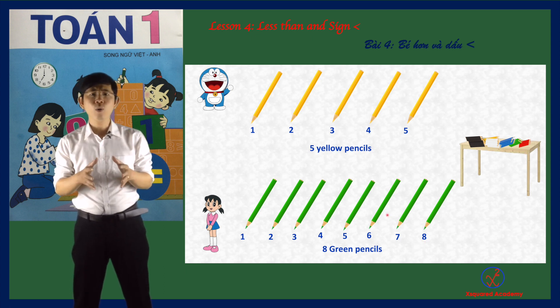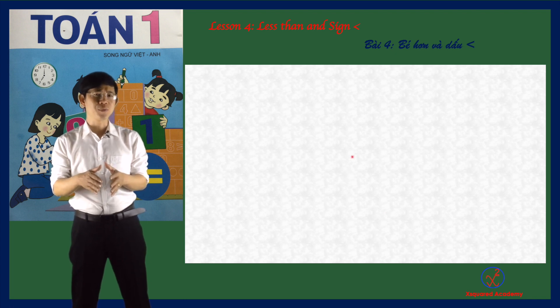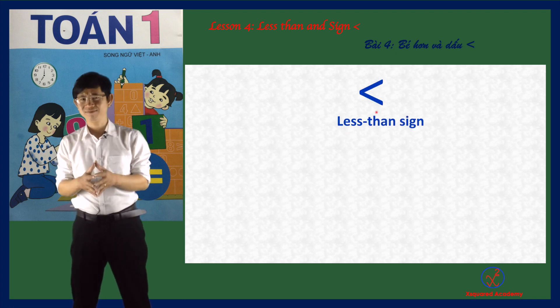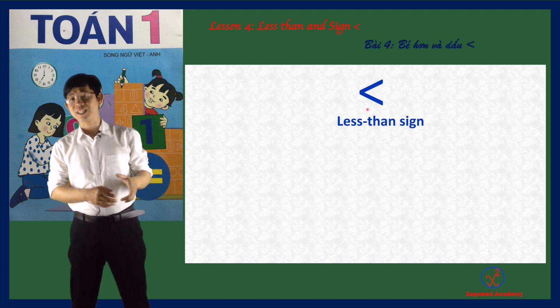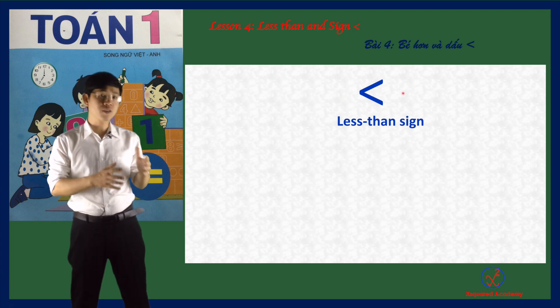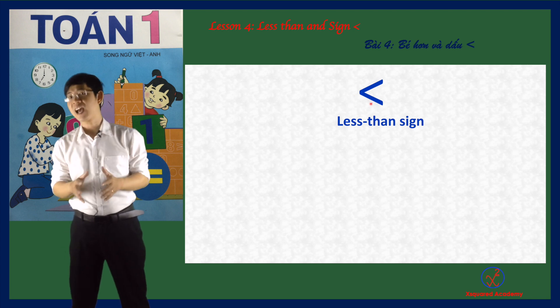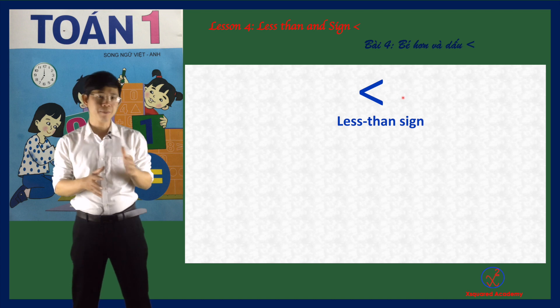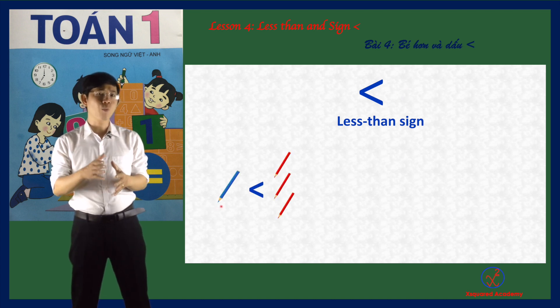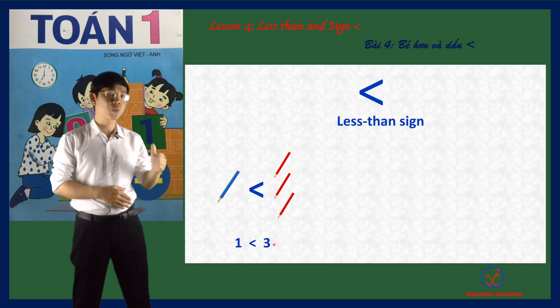Do you know how we write less than in math? We use less than sign. The less than sign has two sides. Small side for small amount. And this side for the large amount. For example, when we say one is less than three, we write 1 < 3.